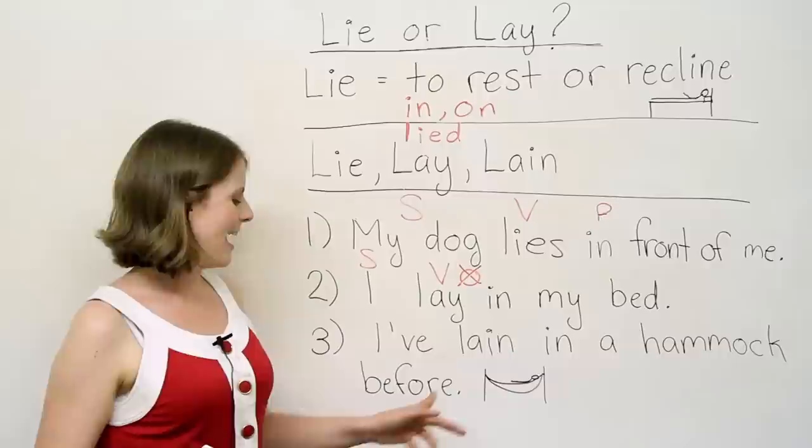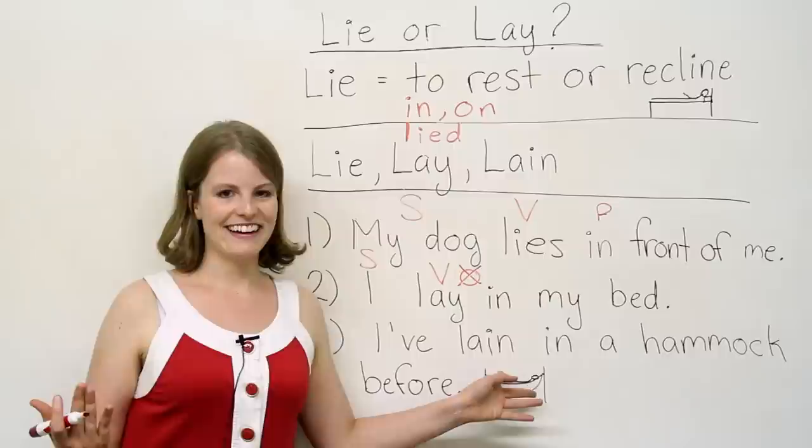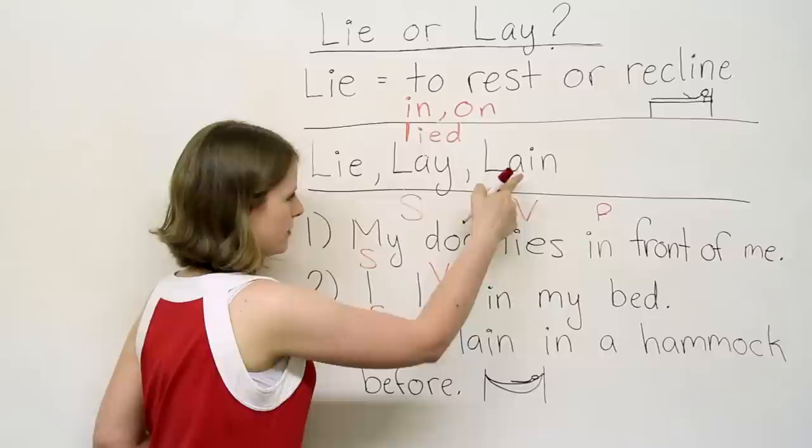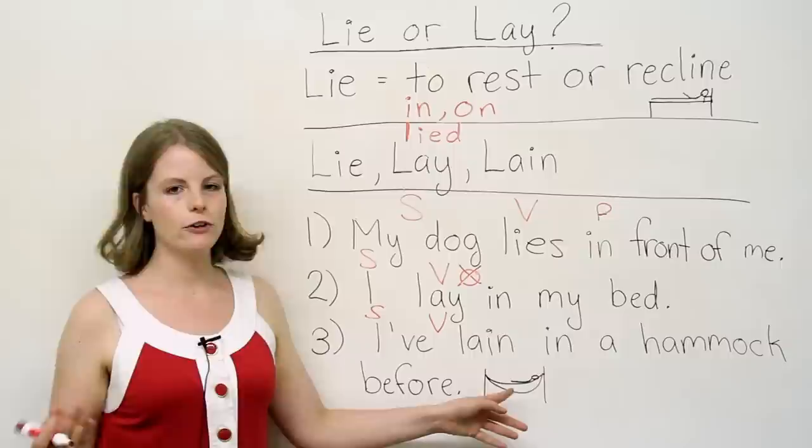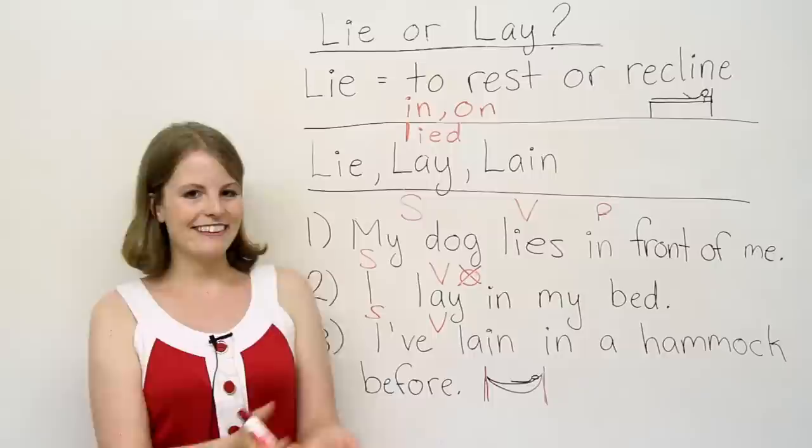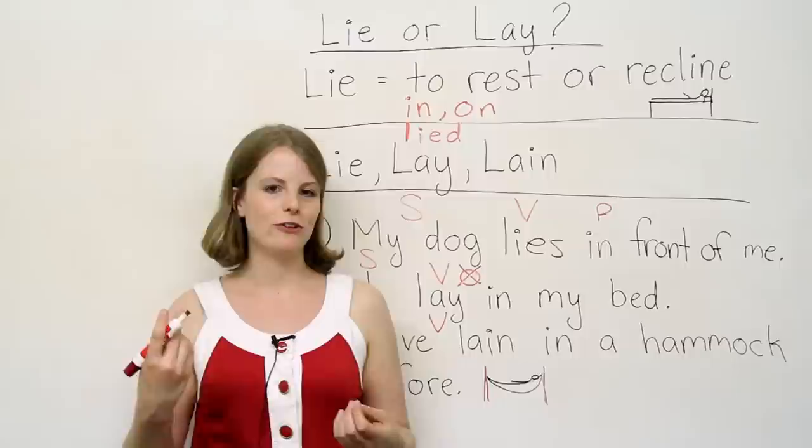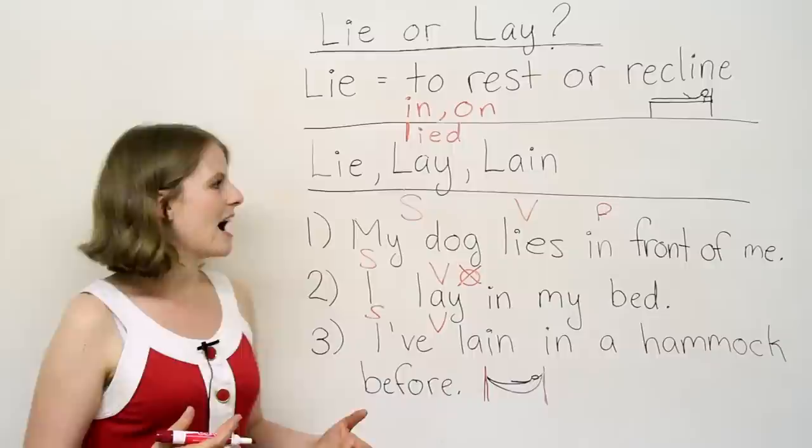Number three. I've lain in a hammock before. Now this is something you probably will not hear too often because, like I was saying, native speakers often confuse lain with laid. So even though this is the correct one, you may not hear it too frequently. So in this case, we have the subject, I. The verb, so past participle, lain. I've lain. Again, we have in. In or on usually follows. A hammock. So for those of you who don't know what a hammock is, during the summer time, these are very popular. There's something to sleep in, to take a nap in. So usually, you have two posts and you have maybe some sort of material and you just lie on it. Sometimes you hang a hammock between two trees. So I've lain in a hammock before. So in this case, we're using the present perfect.